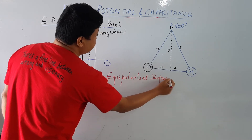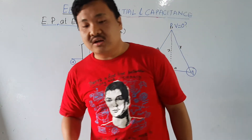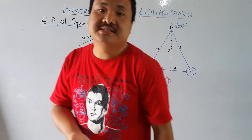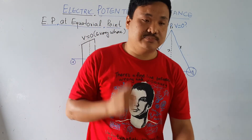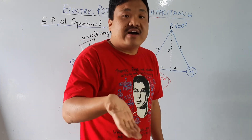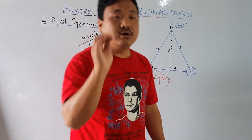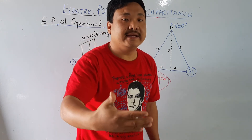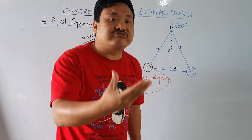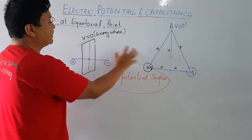From this equipotential surface, the board will always ask some questions. A typical board question is: define the equipotential surface of an electric dipole. The answer is: it is a plane passing through the center of the electric dipole at which the electric potential is zero everywhere. That is the equipotential surface of the dipole.